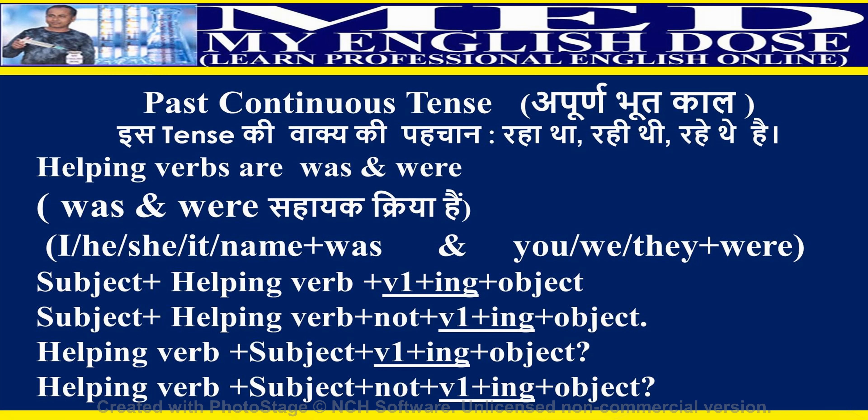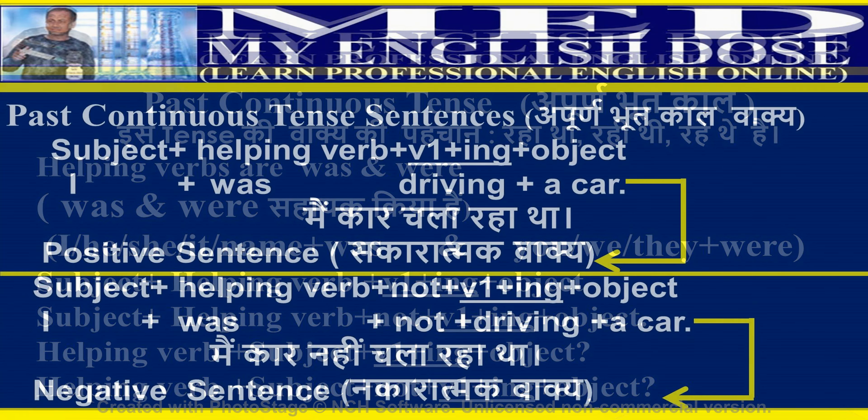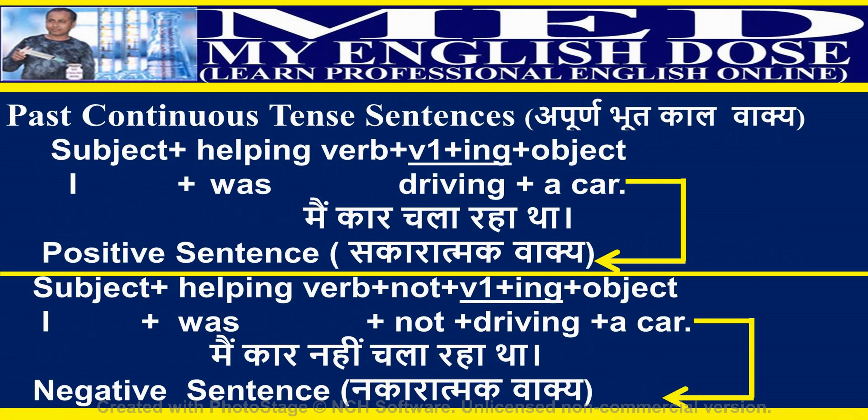Past continuous tense sentence structure: Interrogative — helping verb plus subject plus first form of a verb plus -ing plus object. Interrogative negative — helping verb plus subject plus not plus first form of a verb plus -ing plus object. In the given sentence, 'I' is the subject, 'was' is the helping verb, 'driving' is the verb in -ing form, and 'a car' is the object.